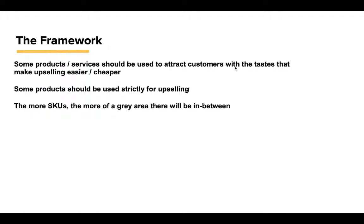The framework: think of your SKUs on a spectrum. Some products and services on one extreme should be used to attract customers with the tastes that make upselling easier and cheaper. The opposite extreme — some products should be used strictly for upselling. The challenge is in between: the more SKUs you have, the more gray area exists where a SKU may be good for both attraction and upsell, making this analysis more complex.